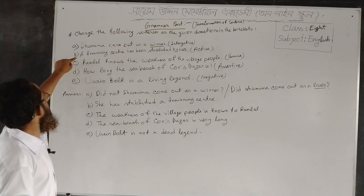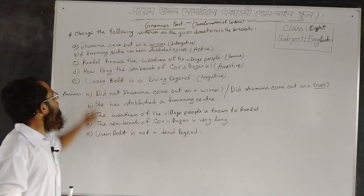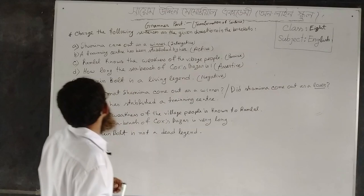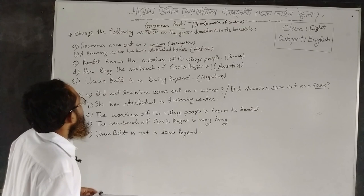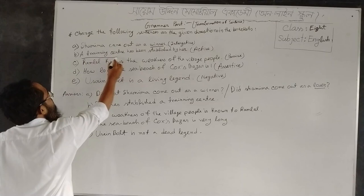The next sentence is: A training center has been established by her. This is passive voice — 'active' is in the bracket — so you have to change the sentence to active form. For this, you have to identify the subject: 'a training center', the verb 'has been established', preposition 'by', and object 'her'.